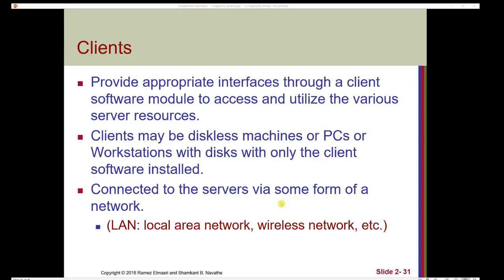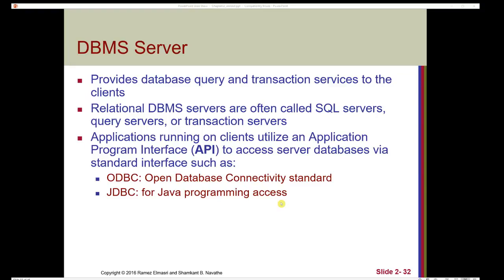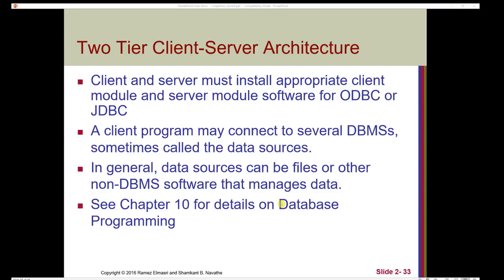Clients may be diskless machines, PCs, or workstations with only the client software installed, connected to servers via a network. The DBMS server provides database query and transaction services to clients. Relational DBMS servers are often called SQL servers, query servers, or transaction servers. Applications running on clients use an application program interface, or API, to access server databases by a standard interface such as ODBC or JDBC. In the two-tier architecture, both client and server must install appropriate modules for ODBC or JDBC. A client program may connect to several DBMSs, sometimes called data sources.